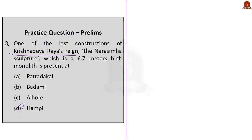A monolith is a sculpture or monument made from a single large block of stone. The Narasimha sculpture, which is a monolith, is present at Hampi. Moving on to the next question about dementia: 'Consider the following statements — Statement 1: Dementia is a normal part of aging. Statement 2: Dementia exclusively affects older adults. Statement 3: Alzheimer's disease is the most common form of dementia. Which of the statements given above is/are correct?'